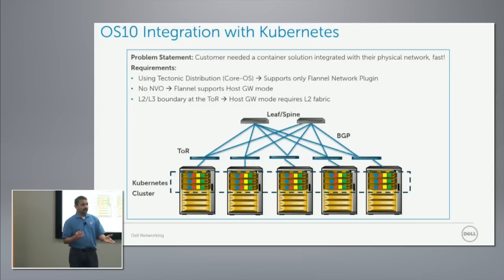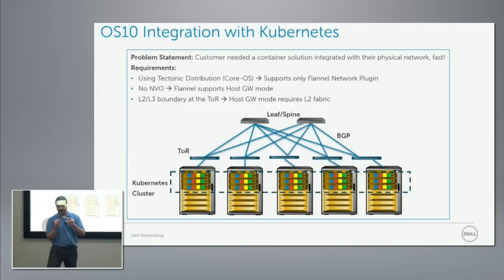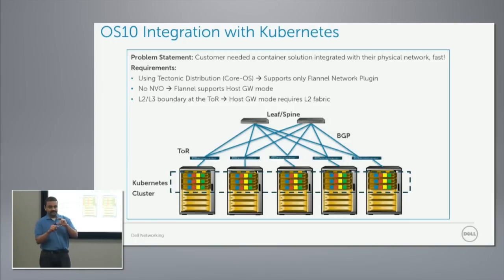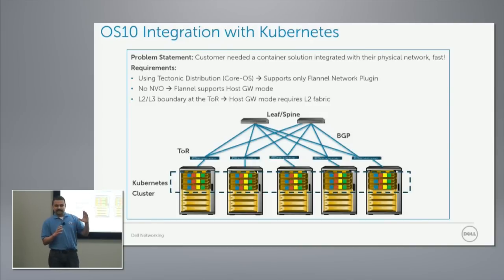Once you install Docker on a host, a Docker bridge is created and you assign a Docker subnet. From that Docker subnet, all IP addresses are provided to the containers. So there are two levels of assignment there.